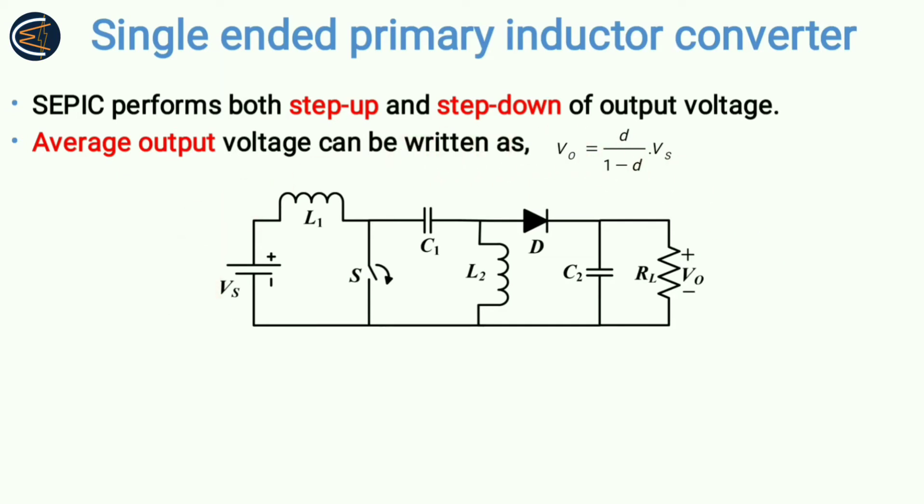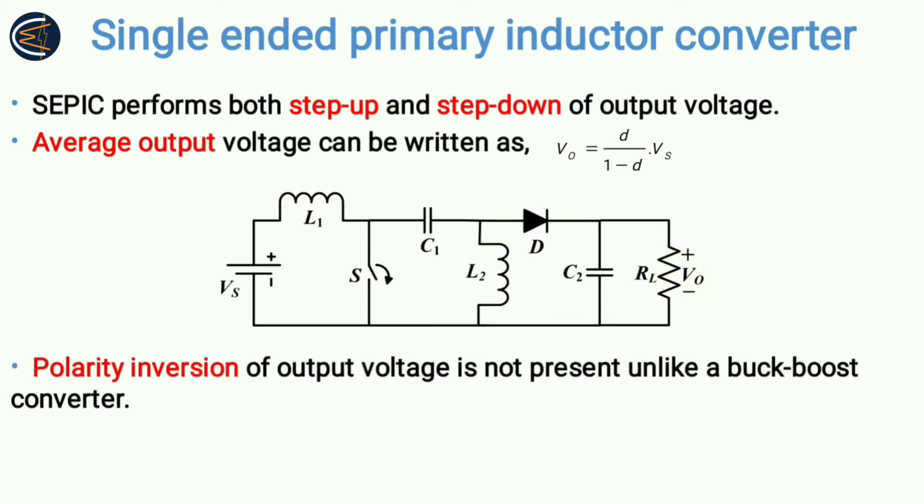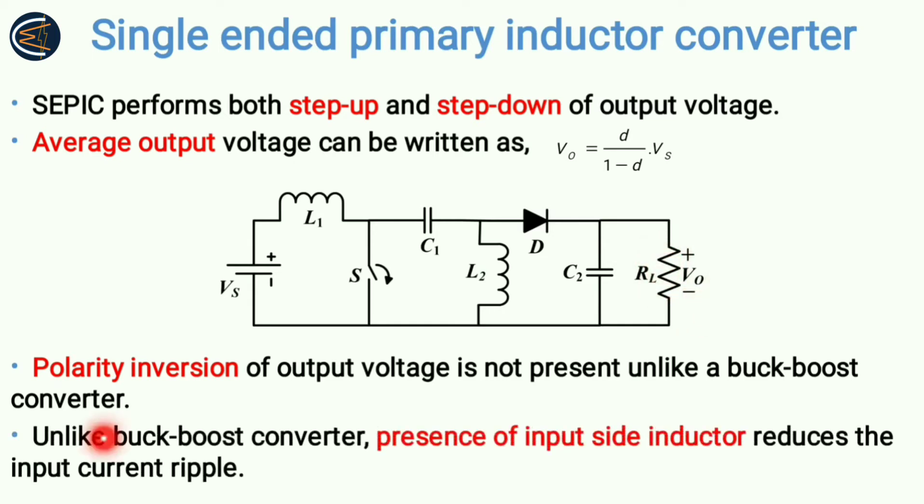The first advantage of SEPIC is polarity inversion of output voltage is not present, unlike buck-boost converter. As we have seen in chook converter, also the polarity inversion takes place, and that creates circuit complexity because you will need some additional circuit to reverse the polarity. But in SEPIC, that polarity inversion problem is not there, so circuit complexity is reduced.